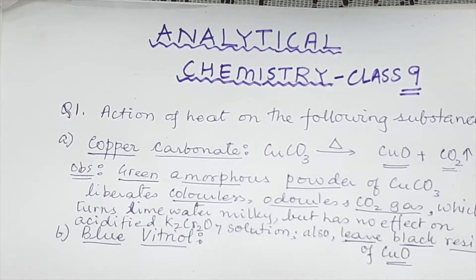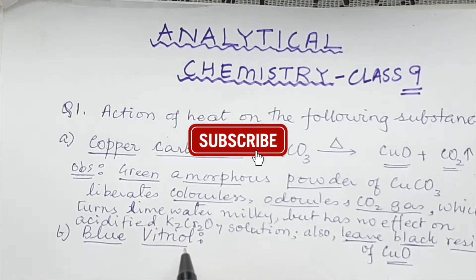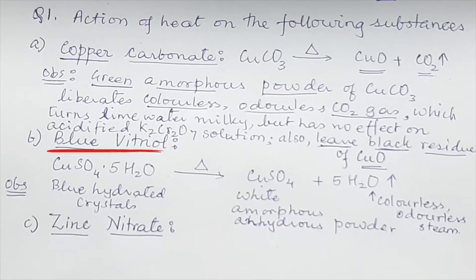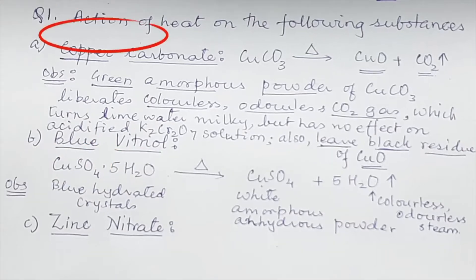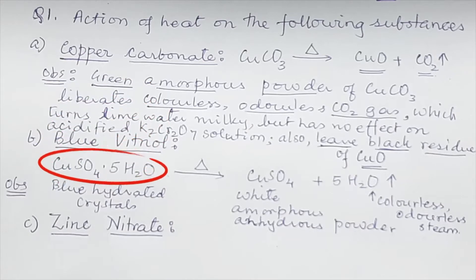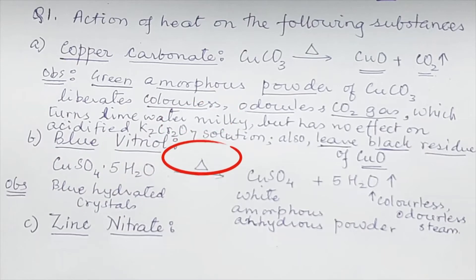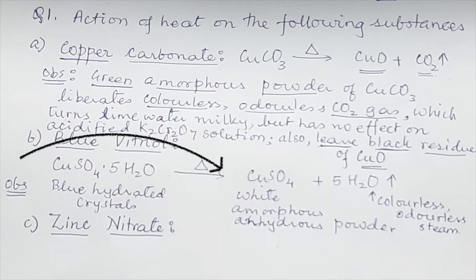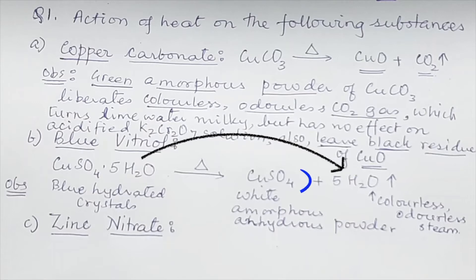Next is blue vitriol. The word vitriol means sulfate, so blue vitriol is blue sulfate — that is copper sulfate, CuSO₄. Remember this is a crystalline substance: CuSO₄·5H₂O. When heated, the water of crystallization will go away, leaving behind anhydrous CuSO₄, and 5H₂O goes off as steam.